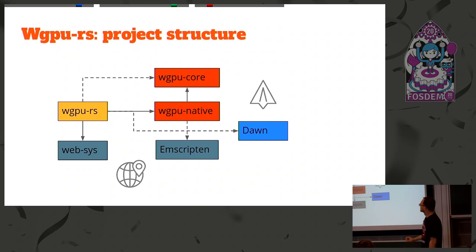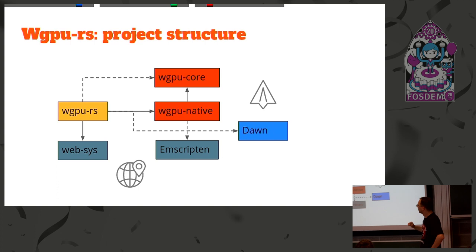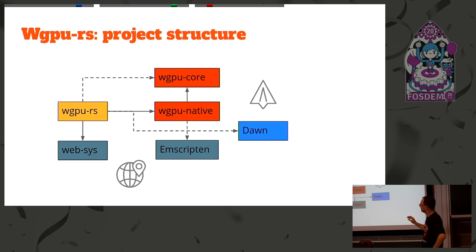This is the structure of WGPU. The current path goes from WGPU-RS — our Rust wrapper — to the native C API implementation, then into core, then into GFX. What we will have is WGPU-RS calling web-sys to let you target the web directly without going through Emscripten. Alternatively, you can use Emscripten to target the web, or use the shared path between WebGPU native and DAWN since they share the same C headers, and run on top of Google's implementation.